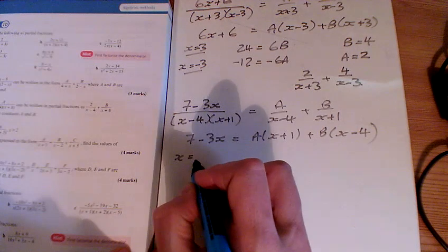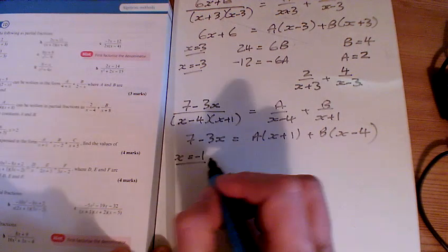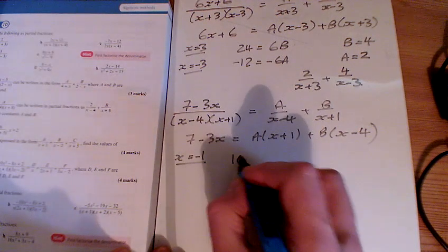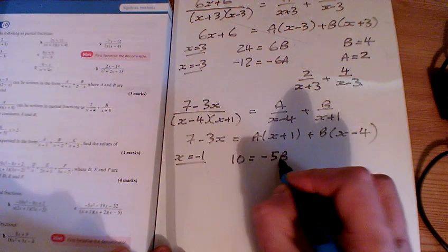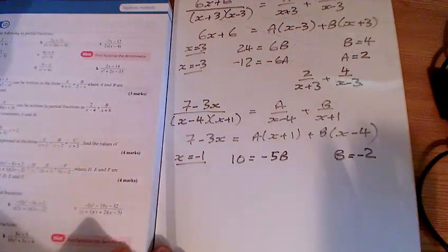The values here I'm going to use then, if x is equal to minus 1, then I'm going to get 10 here. That makes that one 0, that makes minus 5 B's. So B is minus 2.